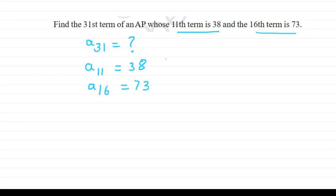We will use these two to get the values of first term and the common difference d, and then we can easily find our 31st term. First, let us make some equations for this A11 and A16.